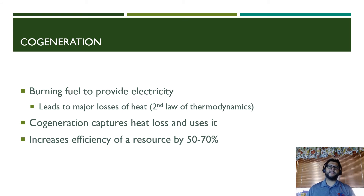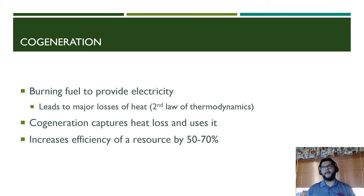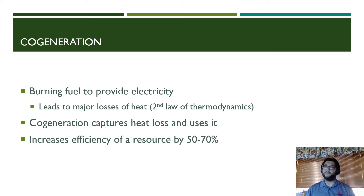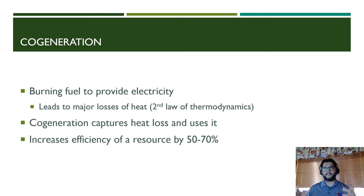One improvement being explored is cogeneration. When we burn fuel to produce electricity, we lose huge amounts of heat — that's the second law of thermodynamics, where energy conversion leads to heat loss due to entropy. The idea of cogeneration is to capture that heat and use it, increasing efficiency of that source by up to 70 percent.